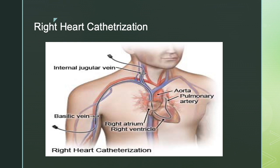Right heart catheterization is the gold standard, and all the measurements which define pulmonary hypertension are ideally based on right heart cath readings. As clinicians, we know we won't always be able to perform it for every patient. So we use additional information from 2D echo, digital subtraction angiography, and other methods. But for conclusive evidence, right heart cath is important not only for diagnosing but also for following up the patient.